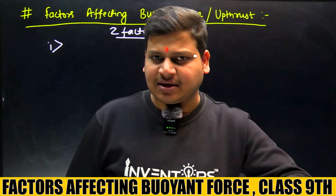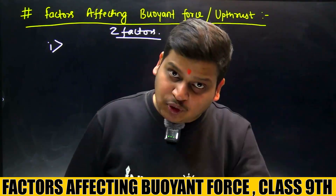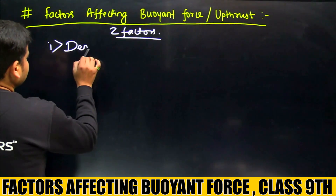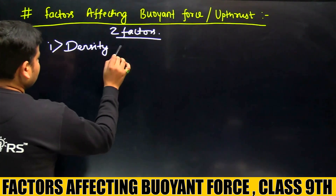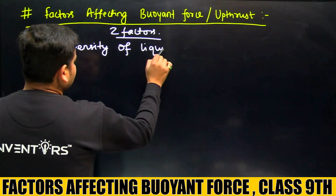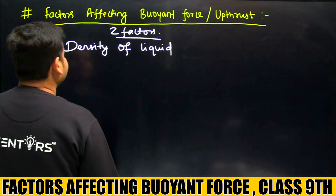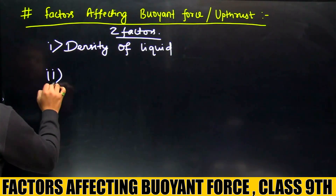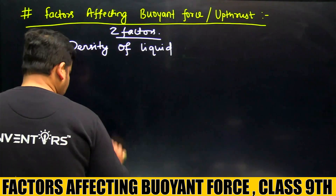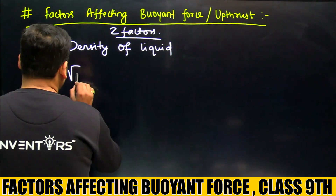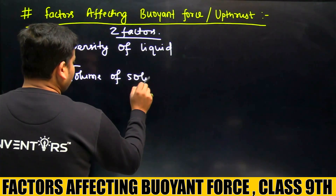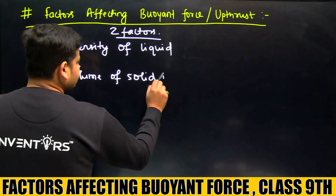यानि जिस object को आप immerse कर रहे हैं, उसका कितना volume आपने डुबाया है। पहला factor है density of liquid, और दूसरा है volume of solid immersed.